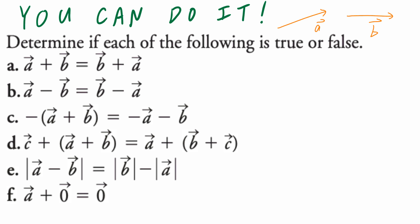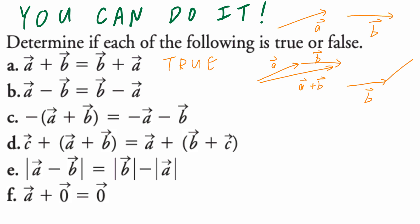Part A: vector A plus vector B equals vector B plus vector A. I think this is true, and you can justify this by drawing the actual vectors. If I think about vector A plus vector B and add them, applying the triangle law, that's going to be vector A plus B. Or, if I start with vector B and add vector A, this is the same resultant vector. So vector A plus vector B equals vector B plus vector A.